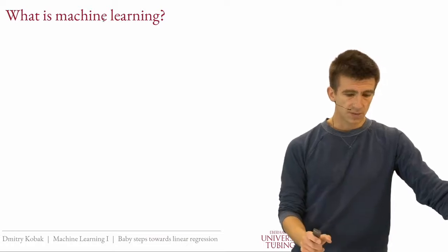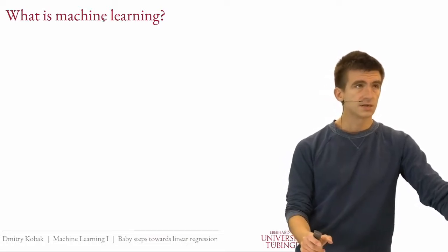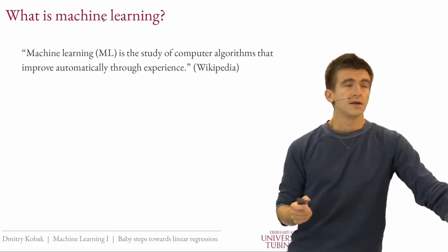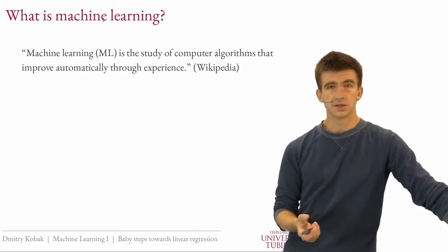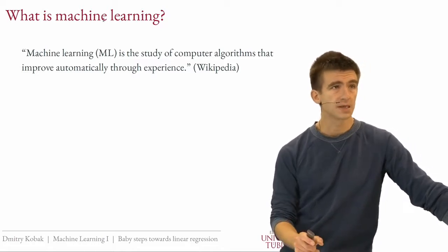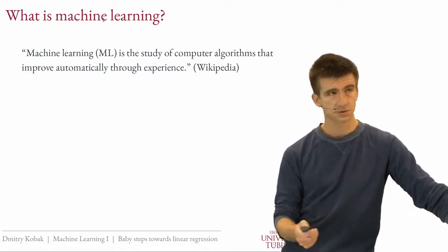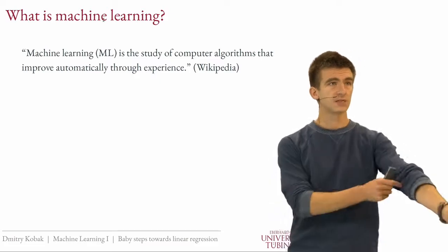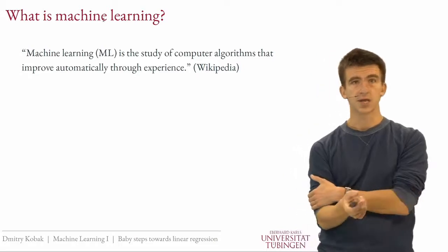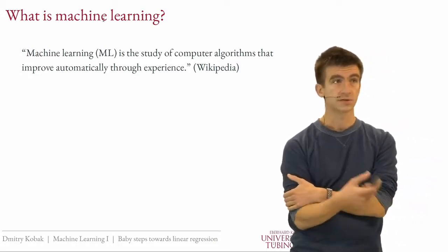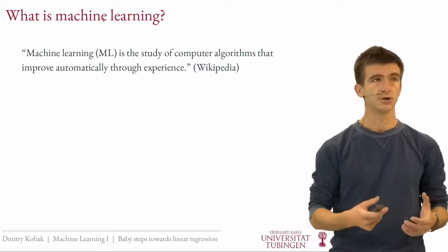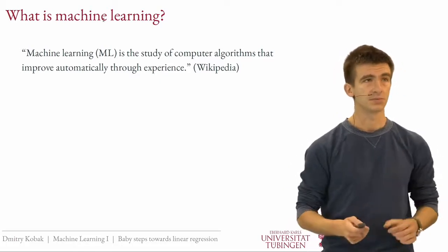What is machine learning? What's this course about? If you open Wikipedia and read the definition in the first sentence, it says: machine learning is the study of computer algorithms that improve automatically through experience. What that brings to mind is something like a computer program playing chess, or a self-driving car — it somehow experiences different chess games, learns and improves, and then can beat human players.